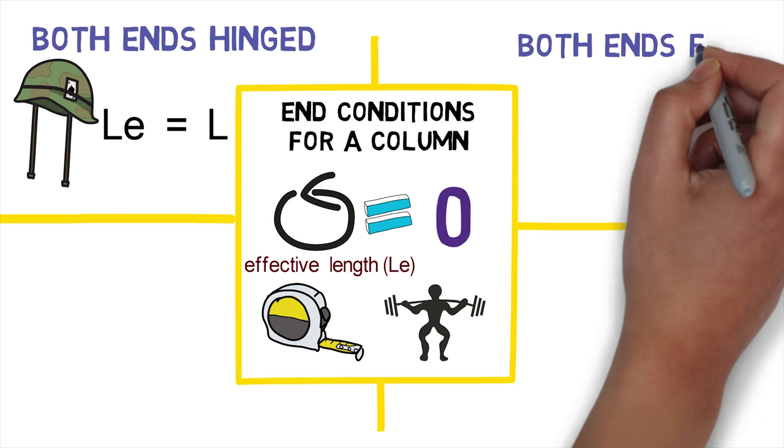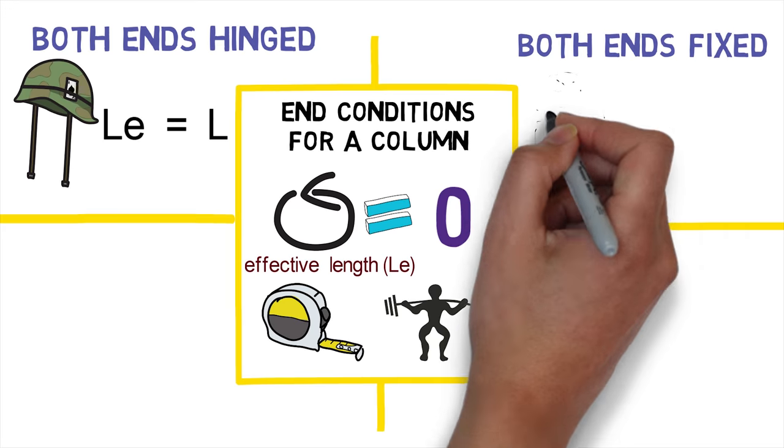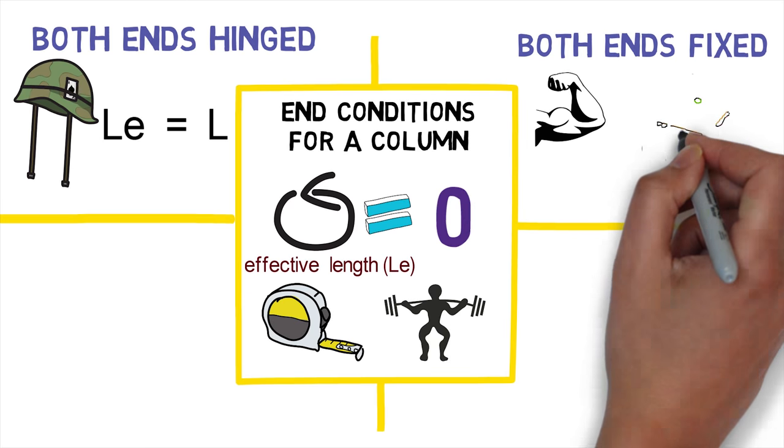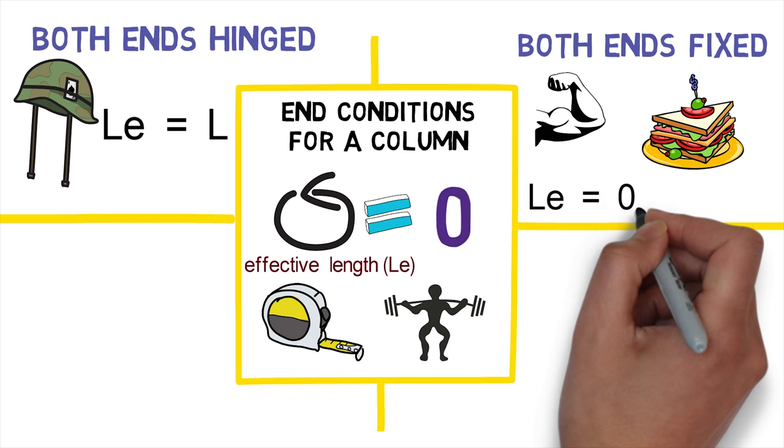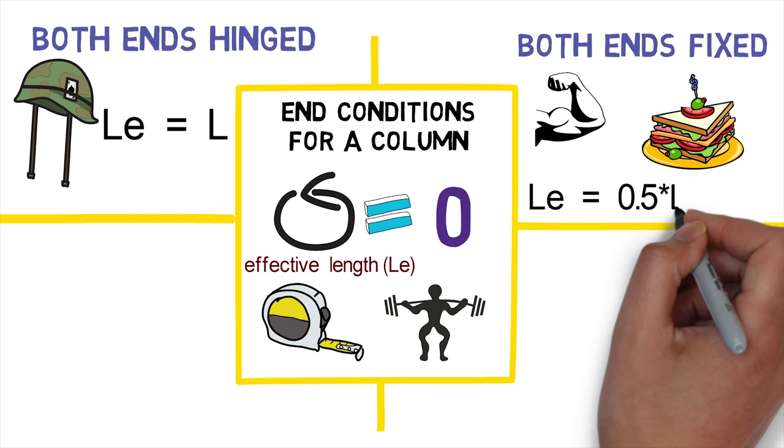Second, column with both ends fixed. This is the strongest column end condition. Both ends fixed column carries maximum load and effective length for this condition is considered as half of total column length.